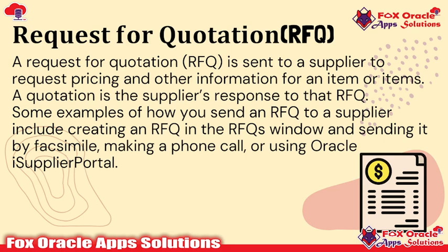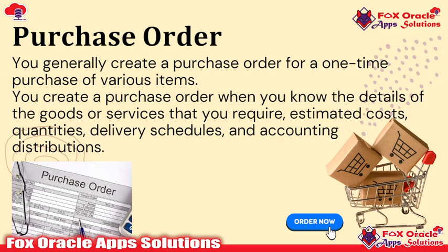A Request for Quotation is sent to a supplier to request pricing and other information for an item. A quotation is a supplier's response to the RFQ. Examples of how you send an RFQ to a supplier include creating an RFQ in the RFQ window and sending it via fax, making phone calls, or using the Oracle iSupplier portal. Once the RFQ is created, the next step is to create the purchase order. You generally create a purchase order for a one-time purchase of various items, or it can also be based on a blanket purchase agreement. You create a purchase order when you know the details of the goods or services required, estimated cost, quantities, delivery schedules, and accounting distribution.